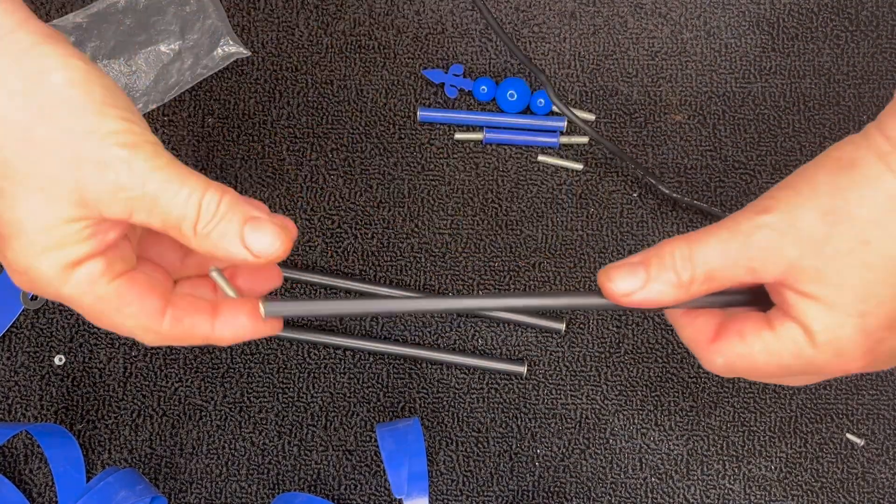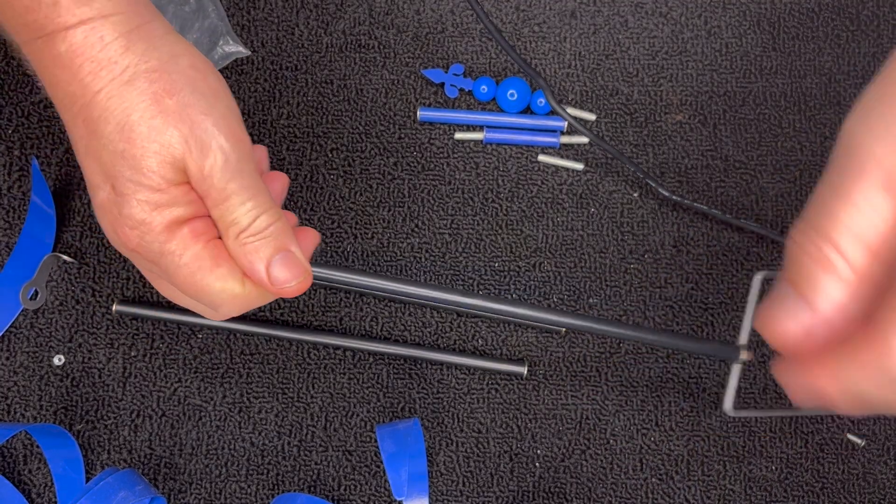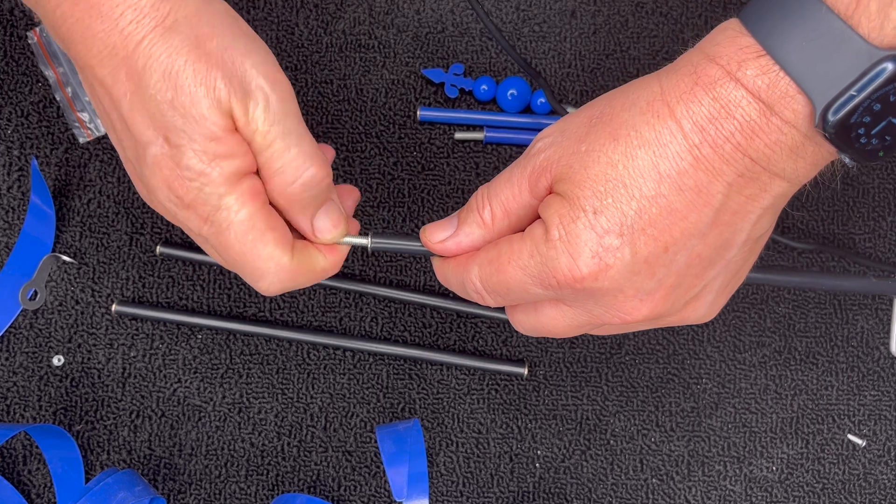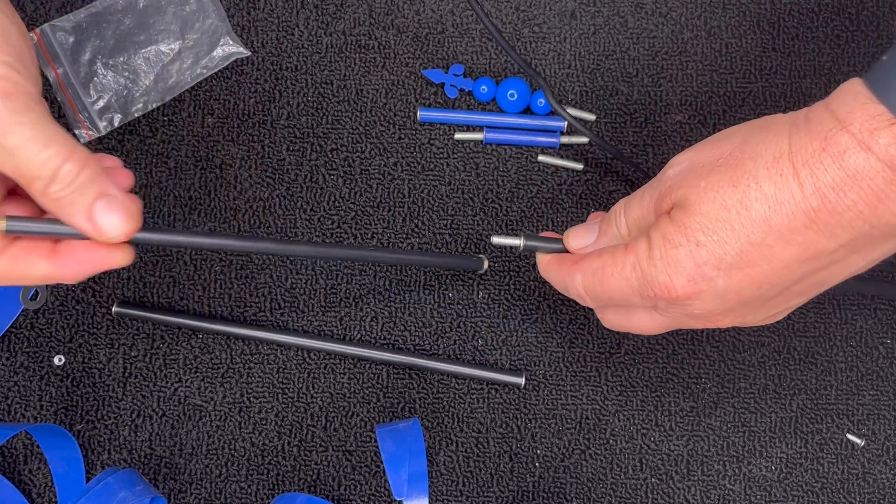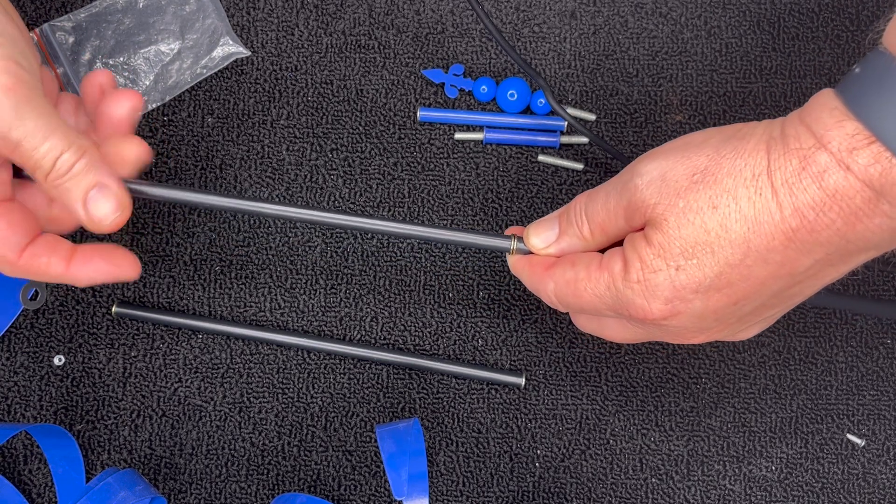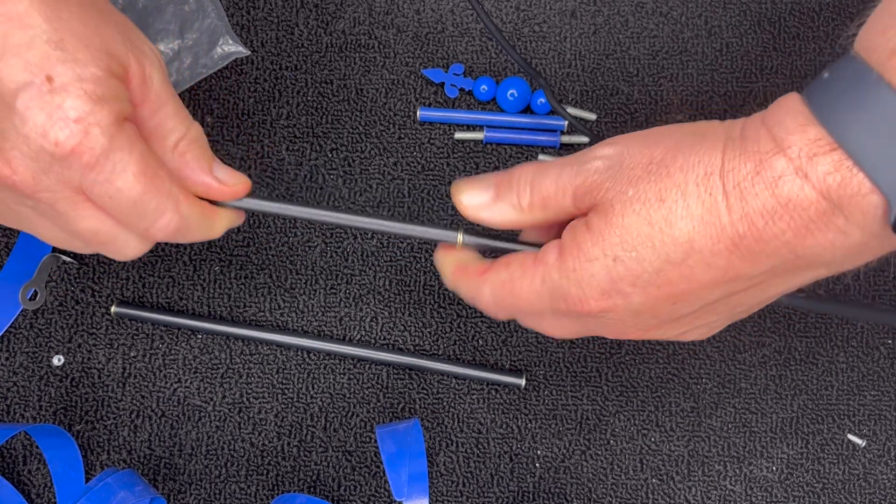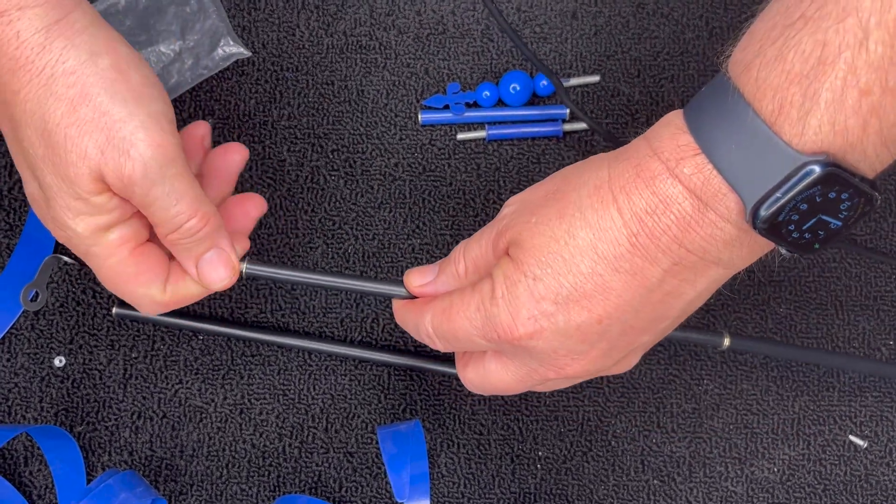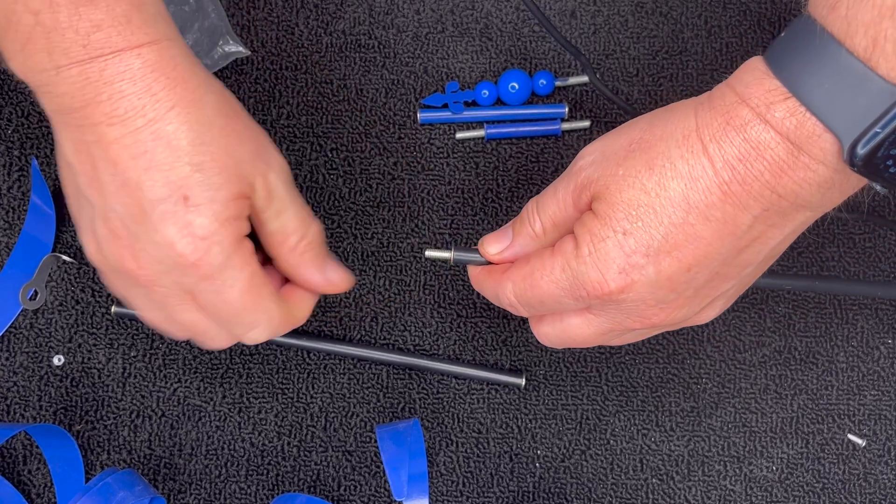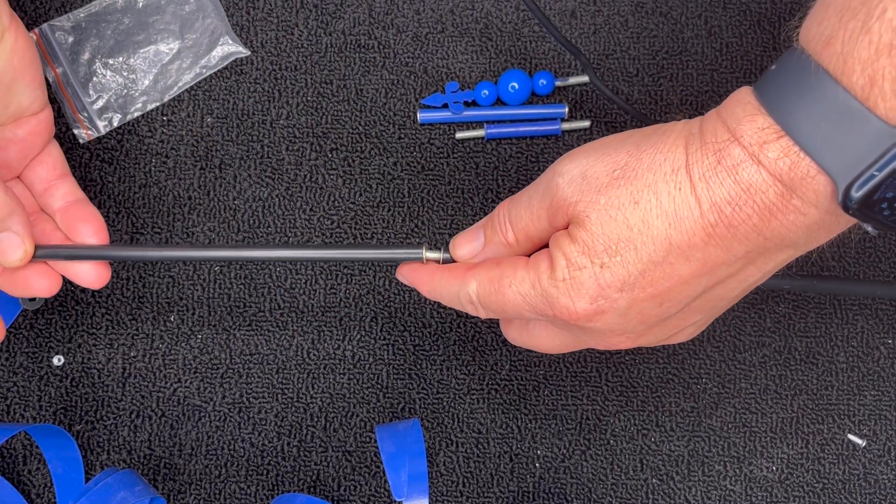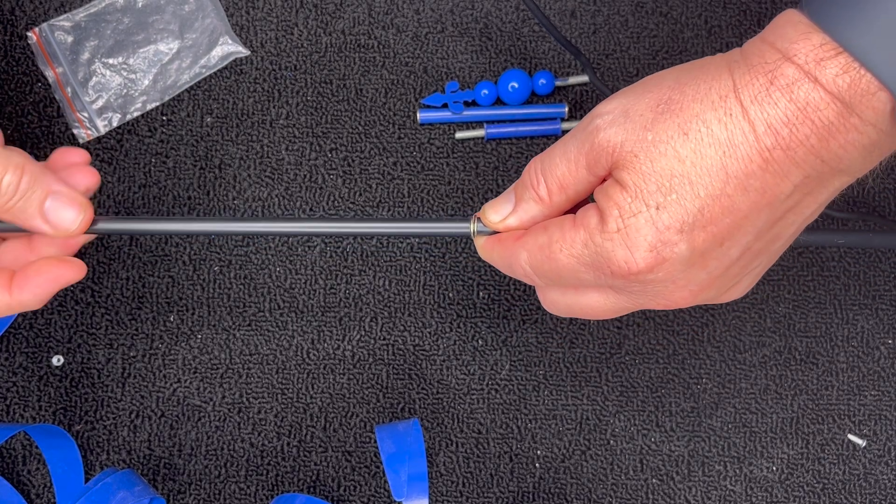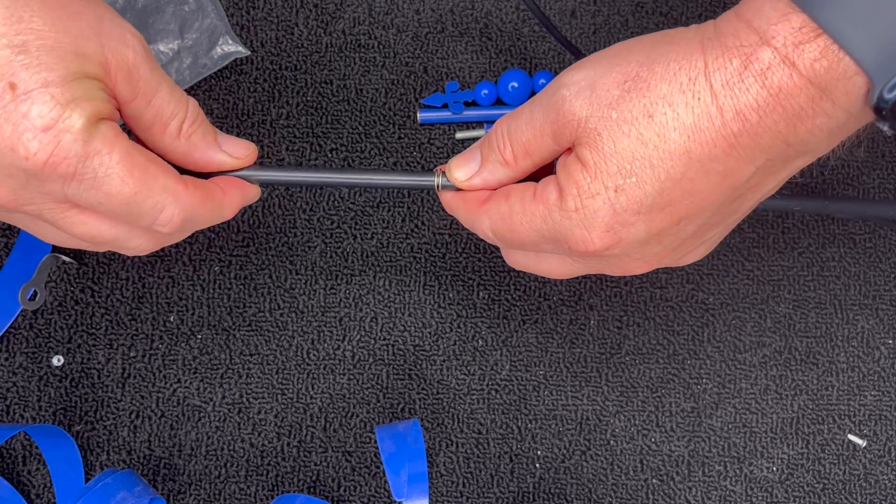Now then once you put this first one in, then you take one of these double threaded bolts, put it in a little ways. Take your next piece and then you just tighten it all the way down, just flush with the other. Then we do it again, tighten it all the way down to where it is flush with the other one.